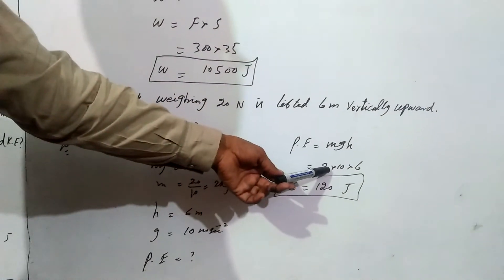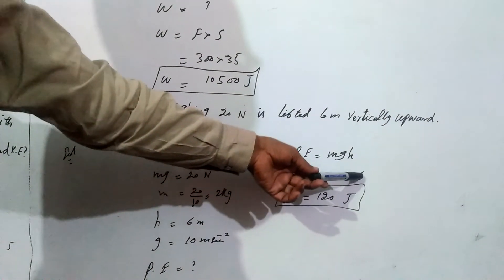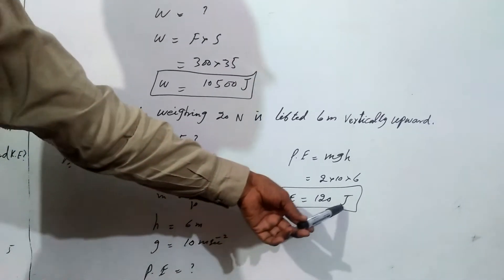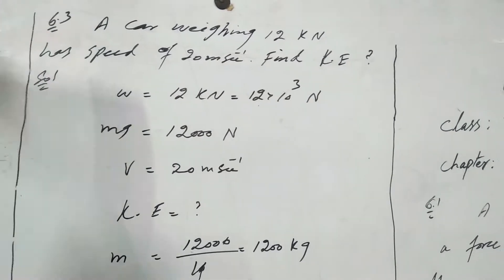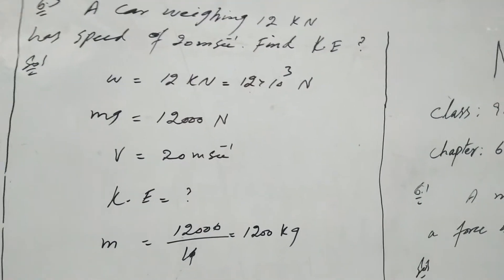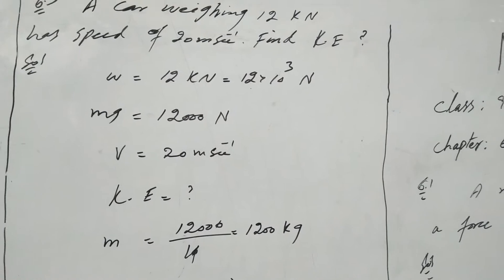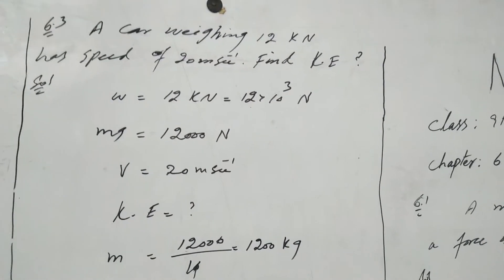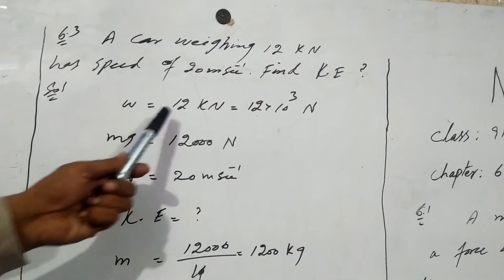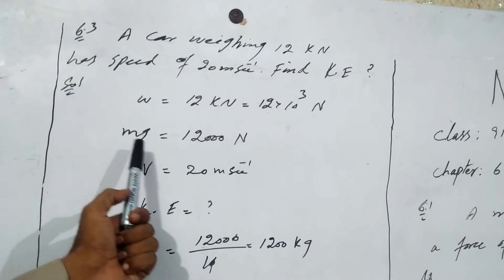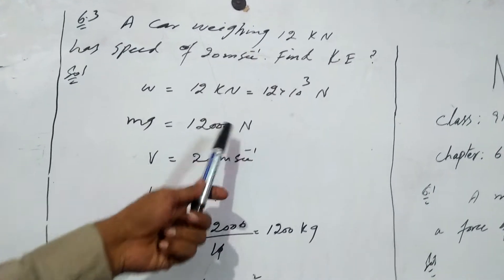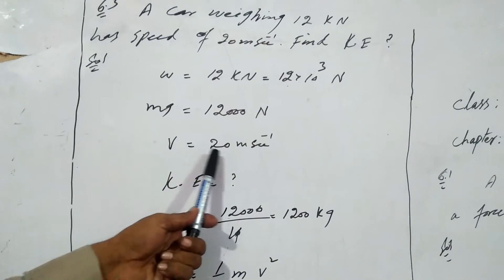In numerical 6.3, a car weighing 12 kilo Newtons has speed of 20 meters per second. Find the kinetic energy. So w equals 12 kilo Newtons. Kilo is equal to 10 to the power 3 Newtons, so mg equals 12,000 Newtons. So v equals 20 meters per second.